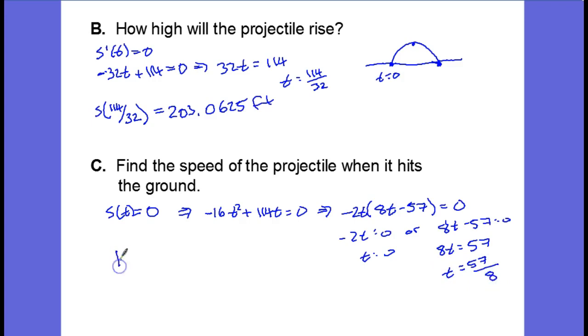Now the speed is the absolute value of the velocity at time t equals 57 over 8. Substitute that into your calculator and make the answer positive, and we get approximately 114 feet per second, which was the same as its initial velocity.